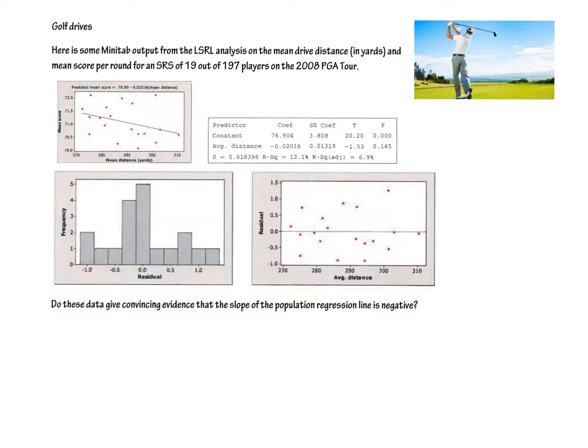So here are those questions about golfing. What they've done is they've taken the opening drive, the drive distance, the distance that you hit the ball off the tee, and the score per round. This is from 2008 PGA, and they took an SRS of 19 out of 197 players. They're taking the mean distance on the x-axis and comparing it with the mean score. So why do we see a negative correlation here? Keep in mind that in golf you want a lower score, which means you are a better golfer. So that does make sense, that the farther you drive may be the better score you have. We've got our information for the LSRL here, we've got a histogram, and we've got a scatterplot of the residuals.